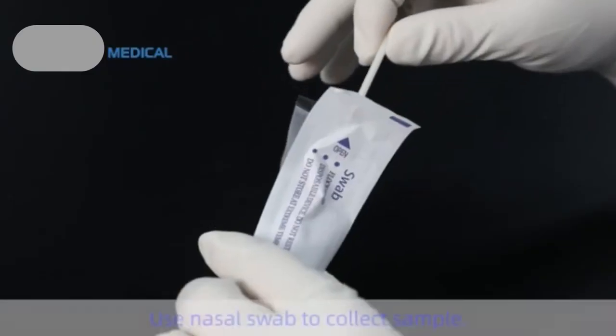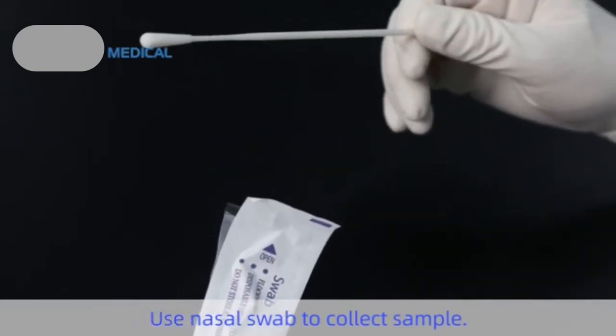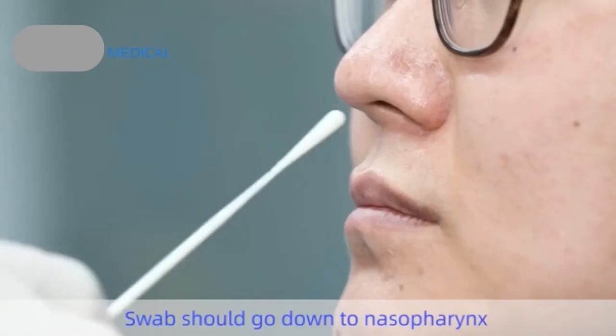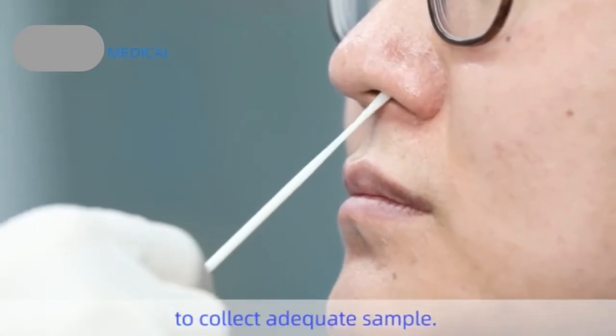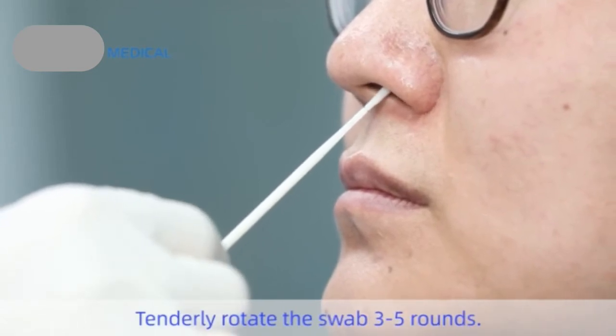Step 2: Use nasal swab to collect sample. Swab should go down to nasopharynx to collect adequate sample. Tenderly rotate the swab 3 to 5 rounds.